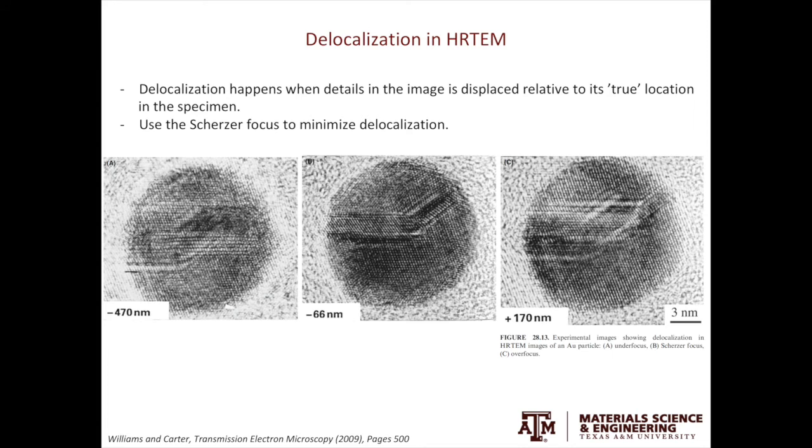Another complication in high-res TEM is called delocalization. Delocalization happens when details in the image are displaced relative to their true location in the specimen. The image in the middle is set at the Scherzer defocus. While the one on the left and the one on the right, they are out of focus. Because of the large value of defocus, in the regions where it doesn't have the gold nanoparticles such as here, you see lattice fringes. Also, the location of the planar defects in the gold nanoparticles are also displaced. The rule of thumb is always use the Scherzer defocus when doing high-res TEM to minimize the delocalization.